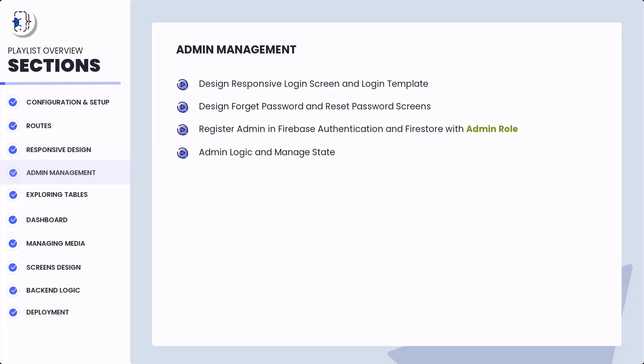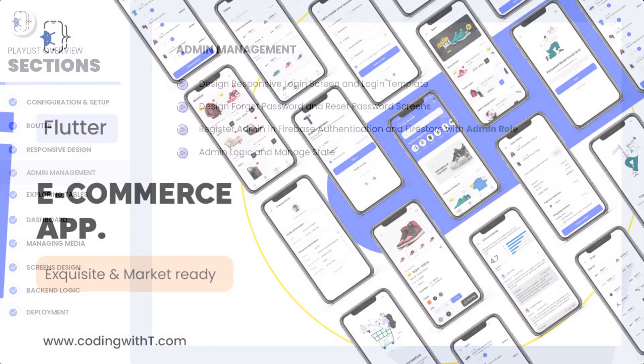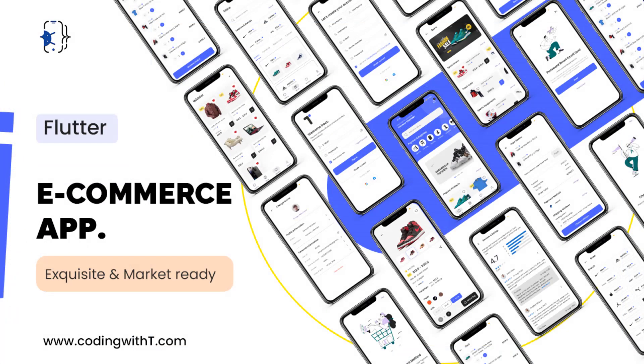In Section 4 we are going to swap the order of the last two videos. The current video is the authentication video, and the next video will cover how to register the admin into Firebase and Firebase Authentication. The reset password and forgot password backend videos are not listed separately because those videos are exactly the same as in the e-commerce app and nothing changes. You can watch those from the e-commerce app series already on YouTube, but if requested I will also upload them to Patreon with the link in the description.